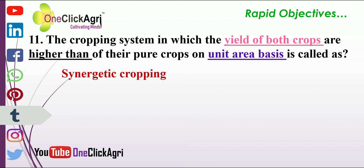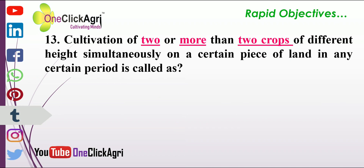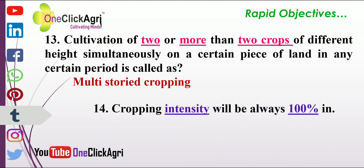Growing hard and thorny crops like mustard or safflower around the main crop are called guard crops. Cultivation of two or more crops of different heights simultaneously on a piece of land in a certain period is called multi-story cropping.